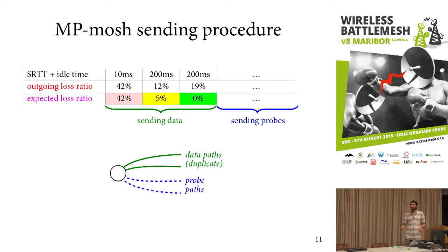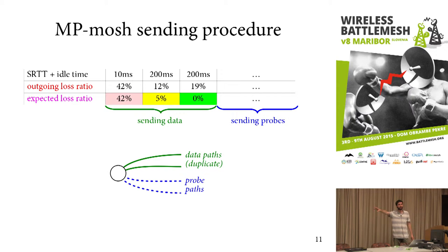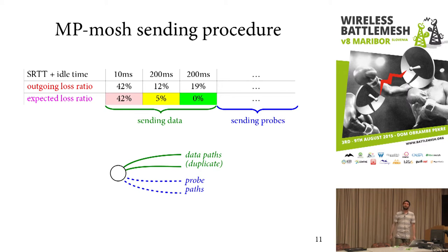The basic idea is this: it first sorts the flows by RTT, then sends the data packet on the best flow — which in this example has 42% loss. Because that's a high loss ratio, it sends a duplicate on the second flow, multiplying the two loss values to get the expected total loss ratio, and continues until the combined loss ratio reaches 0%. For the other paths, it just sends probes, which are very light — about 90 bytes.